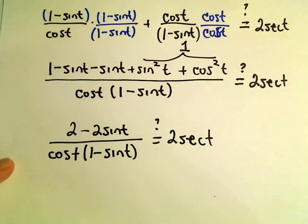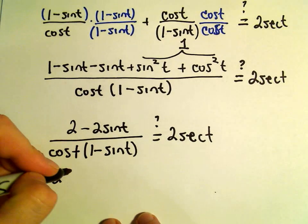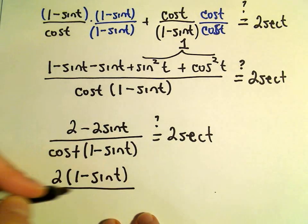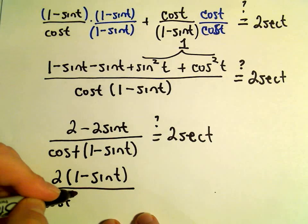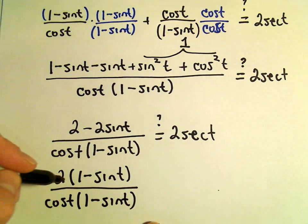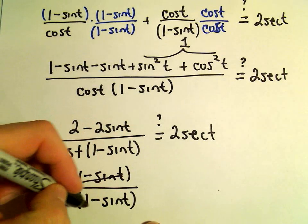Well, looks like we could factor a 2 out of the numerator. Then we would have 2 times 1 minus sine t over cosine t times 1 minus sine t. And hey, now we can cancel out our factors, the 1 minus sine t's.